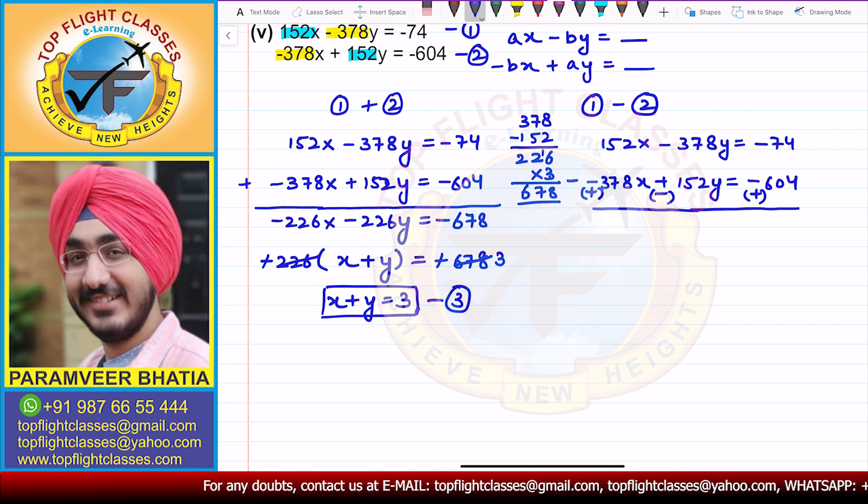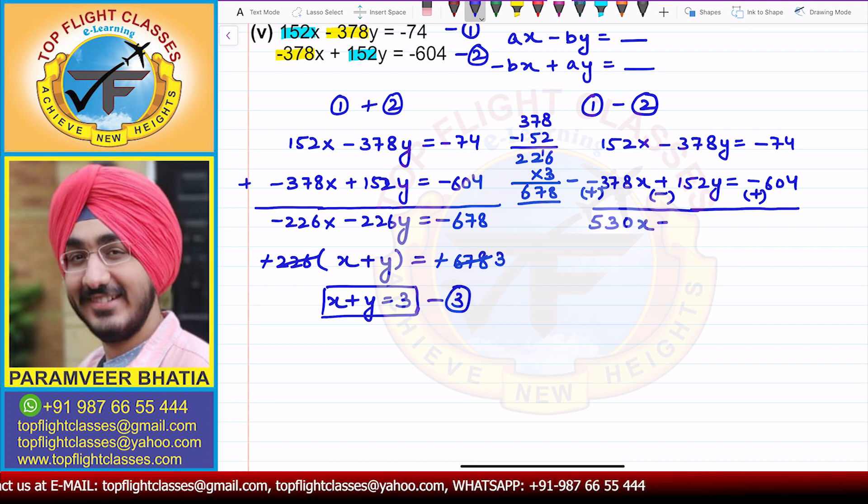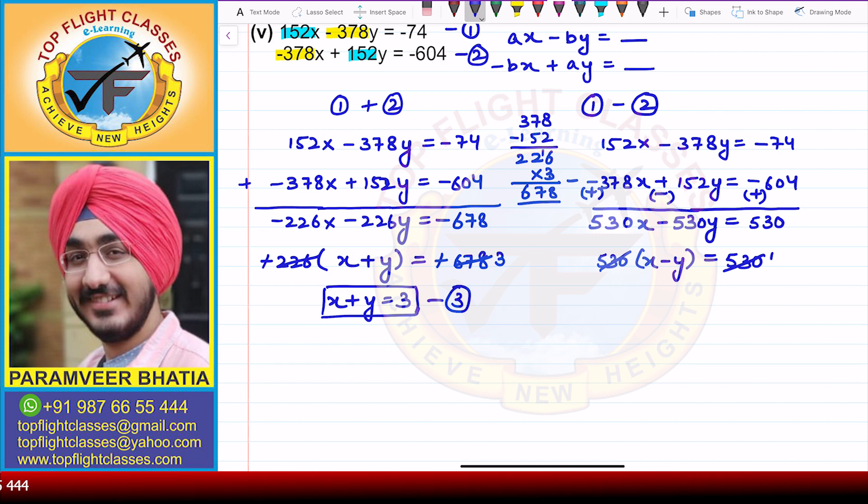So 2 plus 8 is 10. This is 12 plus 1, 13. And 1, 3 plus 1 plus 1, 5. So 530x - 530y = 530. Here you can take 530 common out. You will get x - y is equal to 530 divided by 530, which cancels. You will get 1 over here.